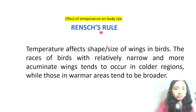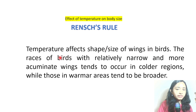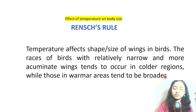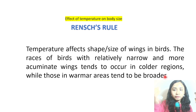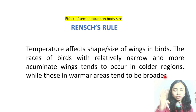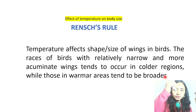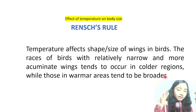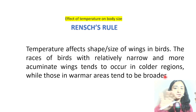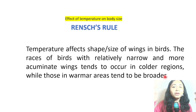The next is Rensch's Rule, again about the effect of temperature on body size. It states that temperature affects the shape and size of wings in birds. Races of birds with relatively narrow, more pointed wings tend to occur in colder regions, while those in warmer areas tend to have broader wings. In warmer regions, broader wings mean a larger surface area to volume ratio, allowing heat loss. In cold temperatures, narrow wings reduce the surface area to volume ratio to retain heat for survival.